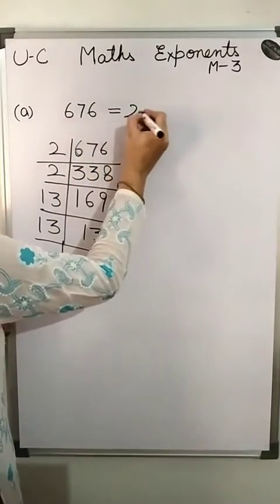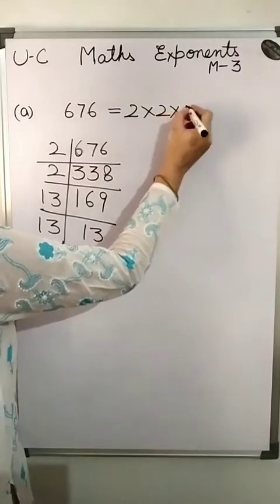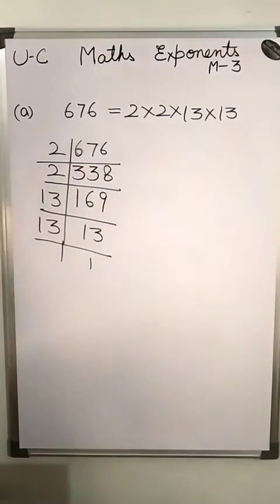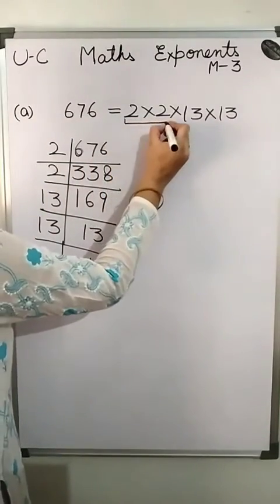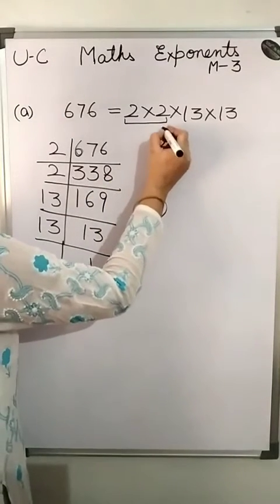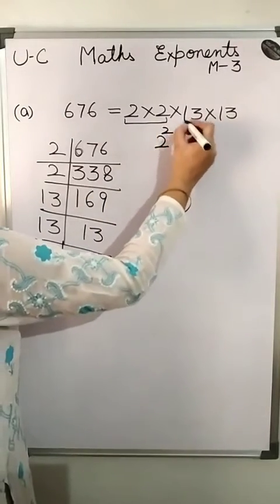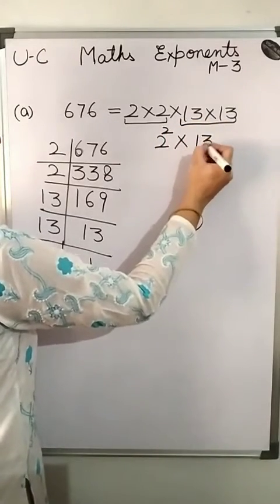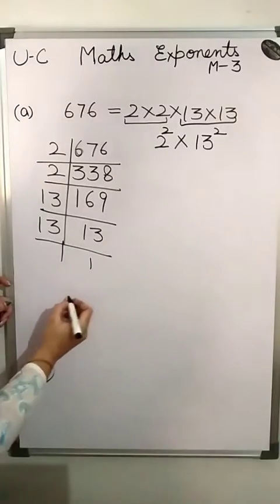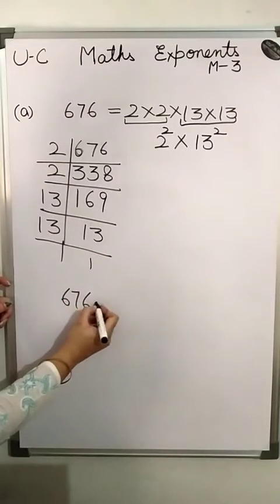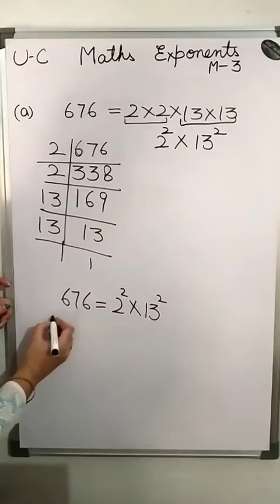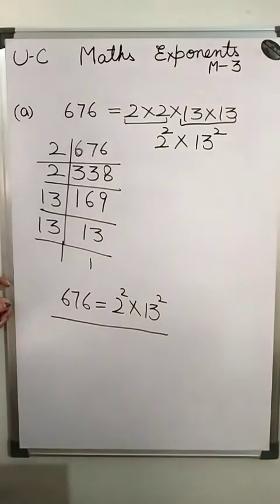So here I am writing these numbers: 2 multiply 2 multiply 13 multiply 13. This number 2 comes twice, so I am writing 2 to the power 2 multiply; 13 comes 2 times so here also I am writing 13 squared. So the value of 676 is 2 squared multiplied by 13 squared. This is the exponential form of this number.